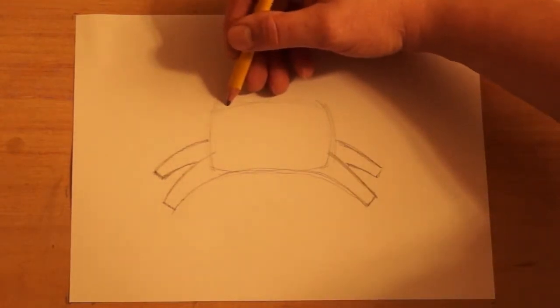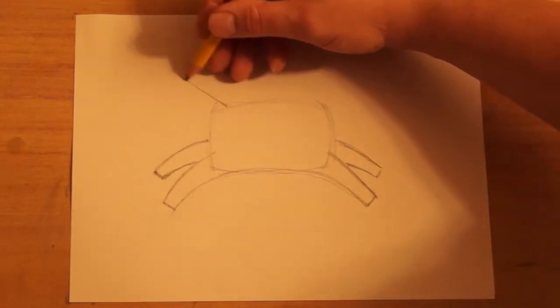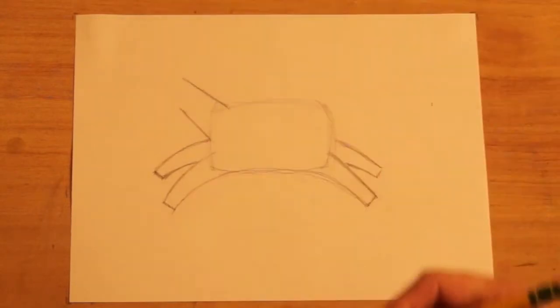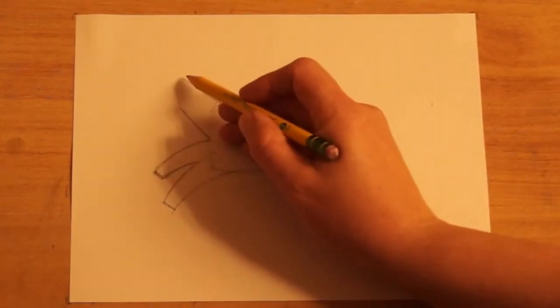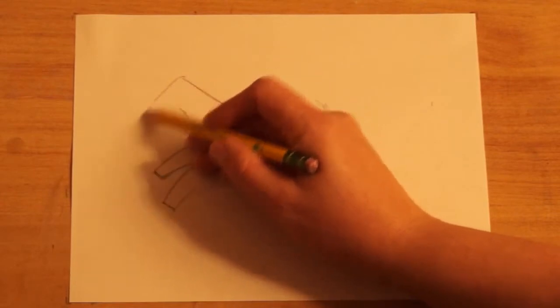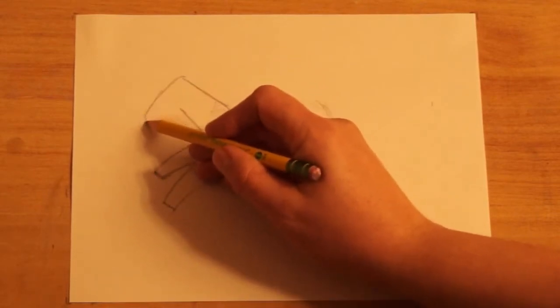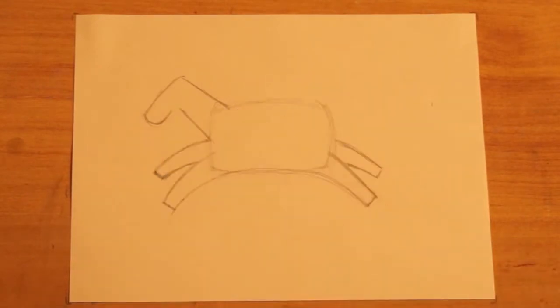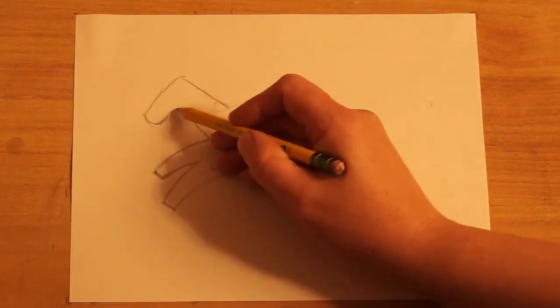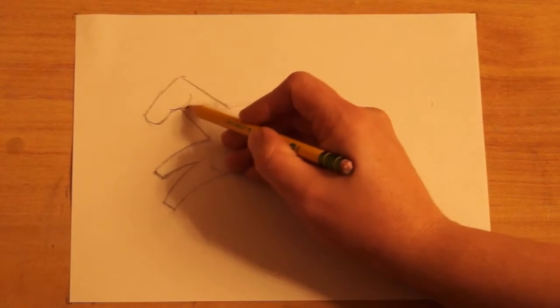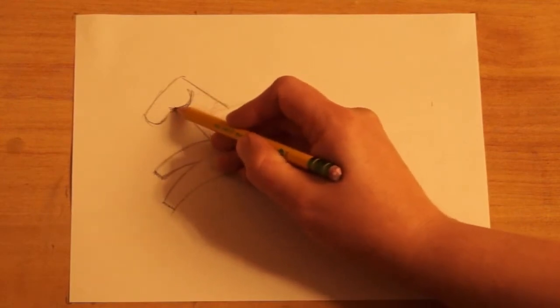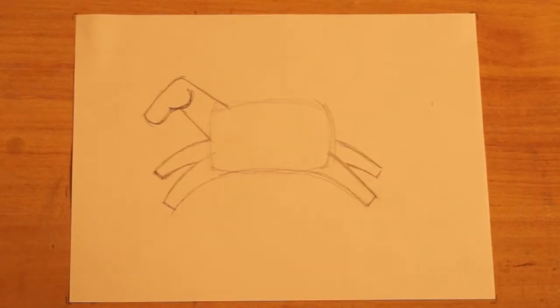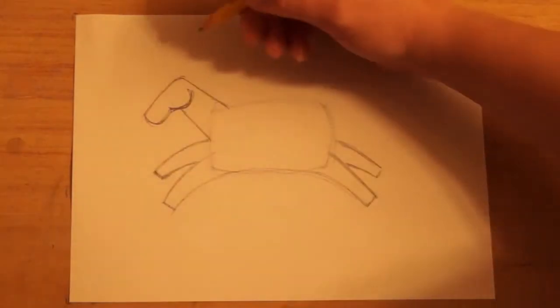Then I'm going to go up here and make the horse's neck and the head. It's going to slant down this way. Kind of a curve on the end. And then the jaw, it kind of sticks out a little bit like that.